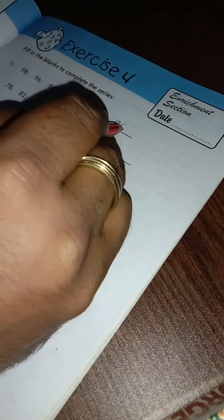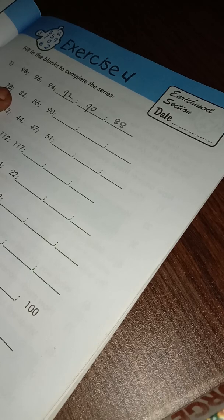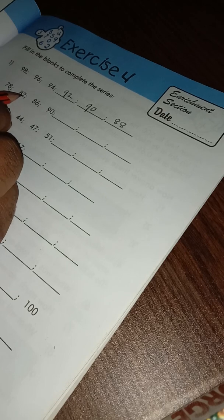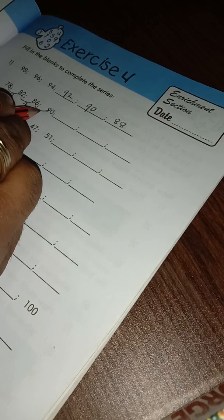Second is 78, then 84. Here is 4 difference, here is also 4. So 86 plus 4 is 90, so here is increasing by 4.